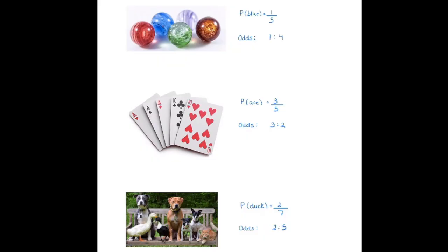You may notice that if we're dealing with odds in favor, the numerator for probability is the same number as that first number in the odds in favor — these are the favorable outcomes. There is one blue marble, three aces, and two ducks in each respective example. So that first number in odds in favor does represent the favorable outcomes. You may also notice that odds is written as a ratio, comparing one object to four other objects — those four other objects being the four other marbles that are not blue.